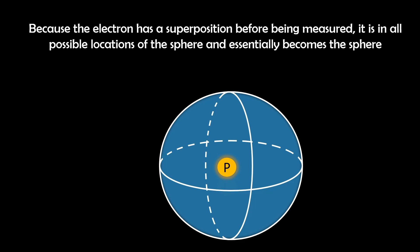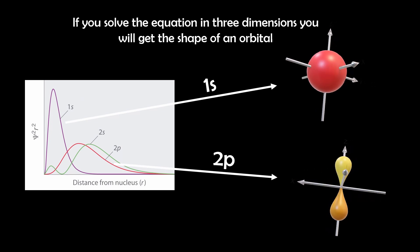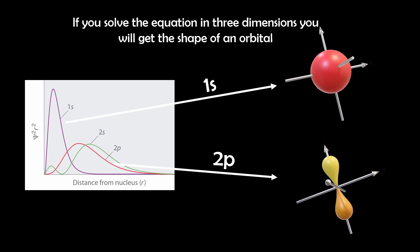So not knowing the electron's exact location allows it to be spread out in a distribution like a wave. Different types of waves represent different probabilities of where it's likely to be, hence the term wave function. It essentially describes the wave shape of the probability distribution of the electron. And if you solve the equation in three dimensions, you will get the shape of an orbital.